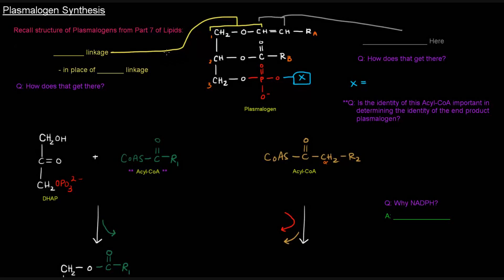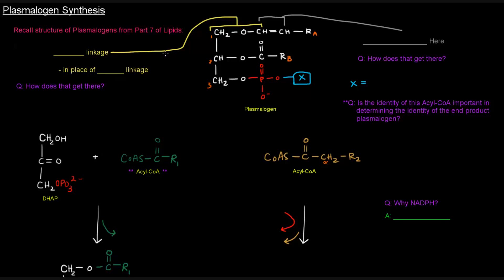So if you recall from part seven on lipids, we talked about plasmalogens as being glycerophospholipids with ether linkages. And that ether linkage is shown here in place of an ester linkage, which is normally there because of an acyl group, which is the case at carbon number two here. But plasmalogens have an ether linkage at carbon number one of the glycerol backbone. Another characteristic is they have the first two carbons of the R group attached at carbon number one, and those two carbons have a double bond between them.